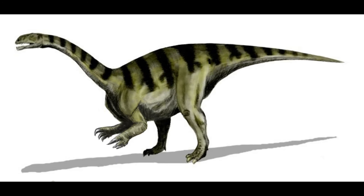The Jurassic period — mammalian diversification — from about 201 to 145 million years ago, was a time of significant diversification for mammals. While dinosaurs dominated the terrestrial ecosystems, mammals began to explore new niches and develop more specialized adaptations. One of the most successful groups during the Jurassic was the multituberculates — small rodent-like mammals with complex multi-cusped teeth adapted for grinding plant material — which thrived for over 100 million years, from the Jurassic to the early Cenozoic.